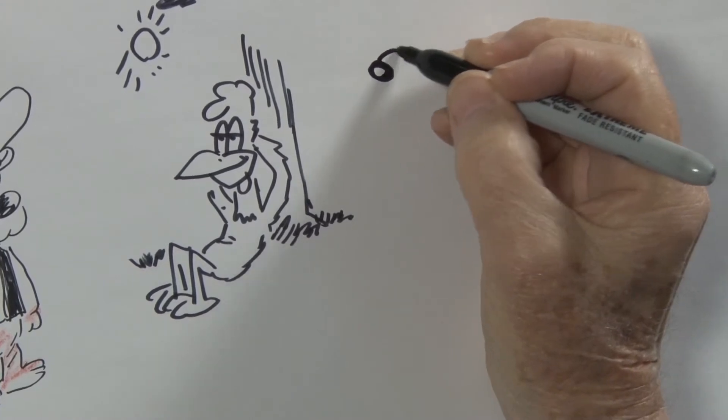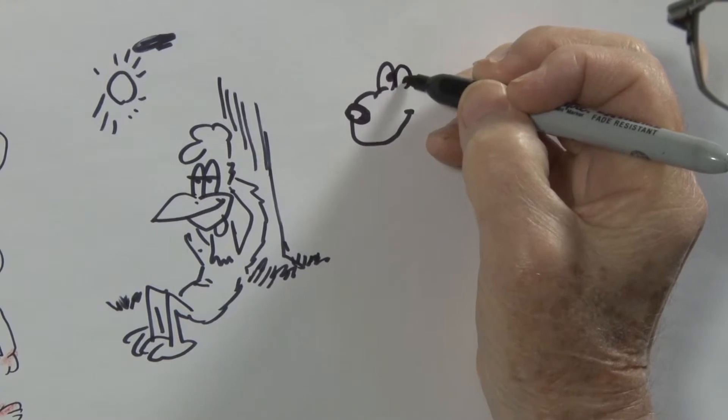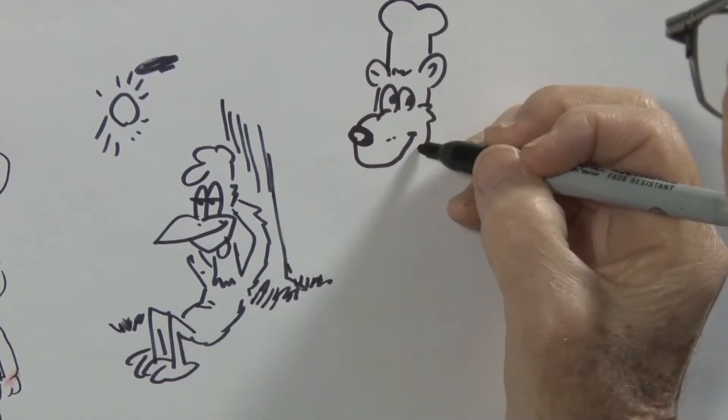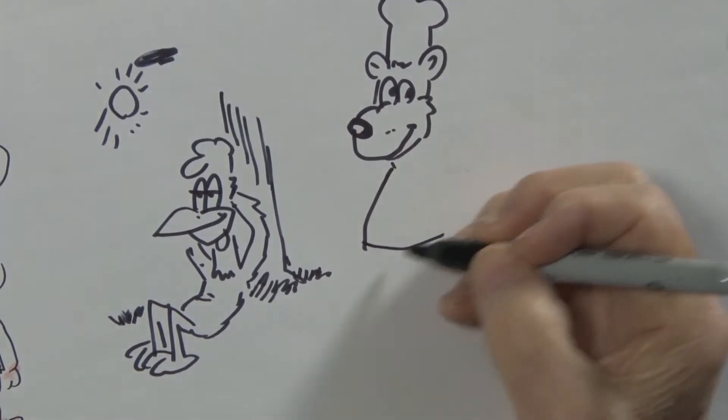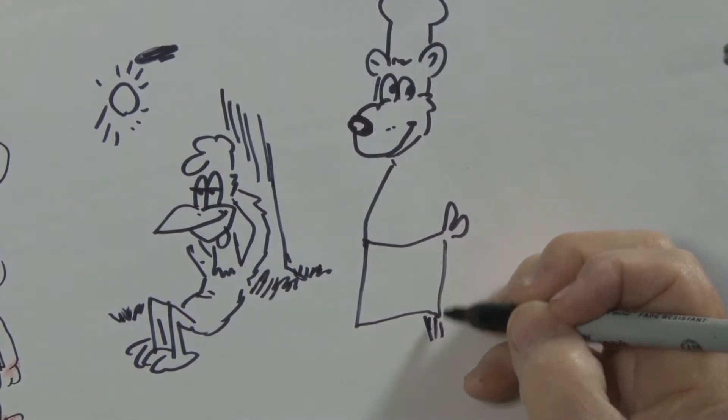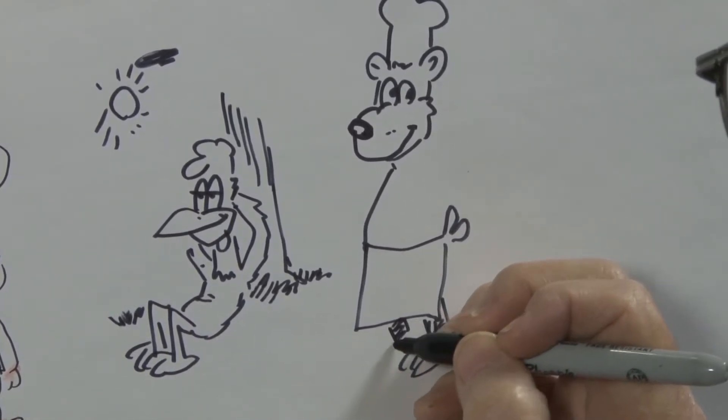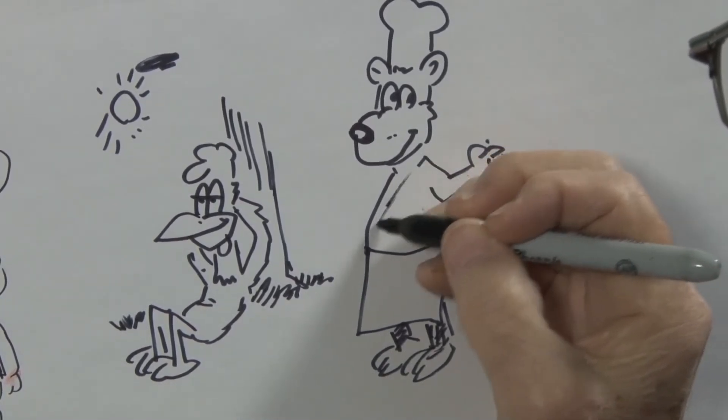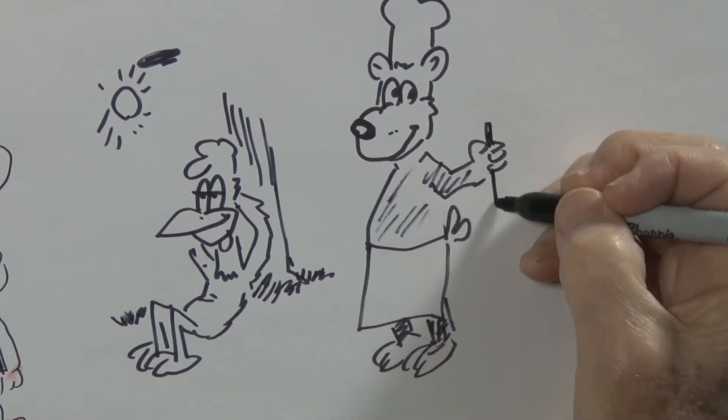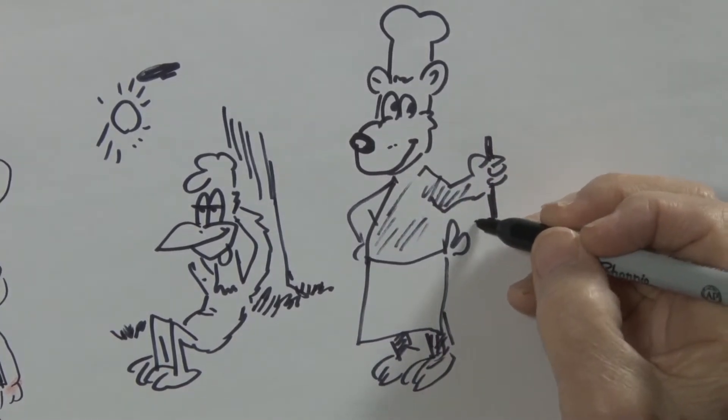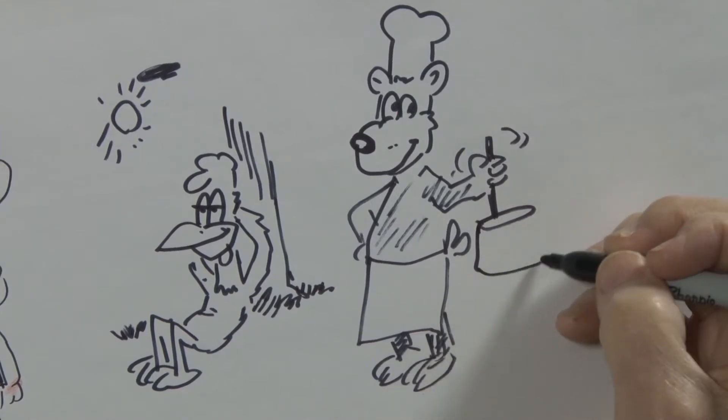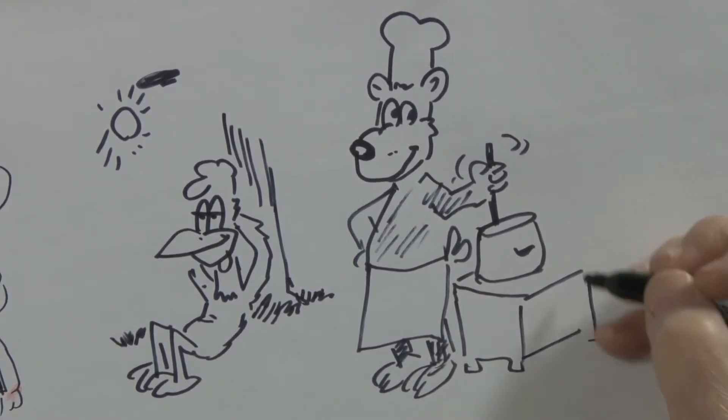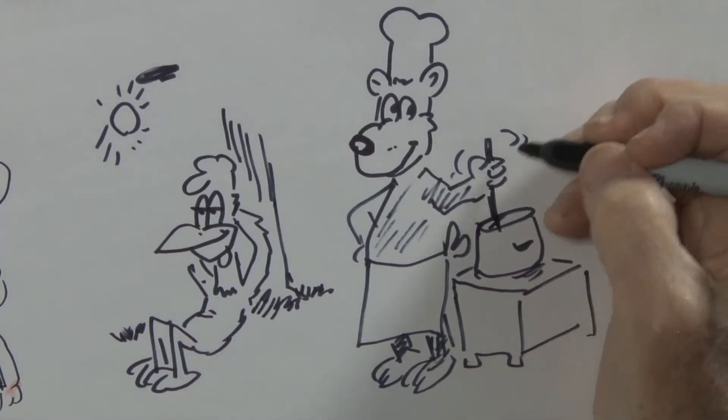And from the expression on his face, he's kind of enjoying his activity as a chef. What's he doing here? Well, he's stirring something on the stove. We've got a kind of a low stove here.